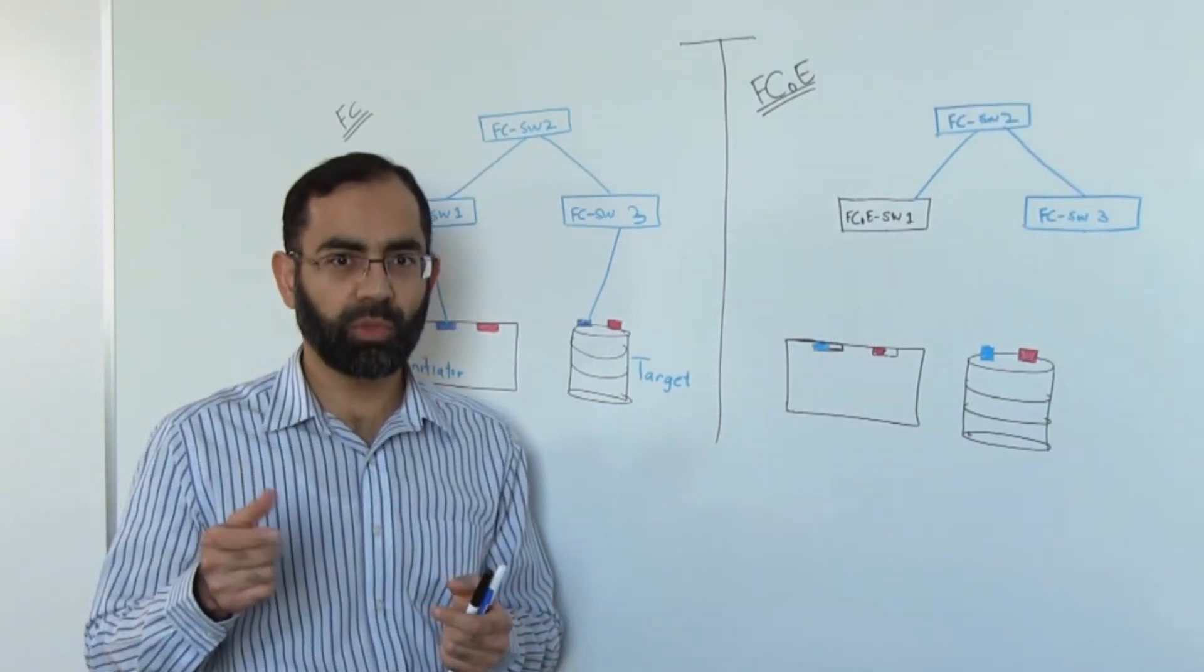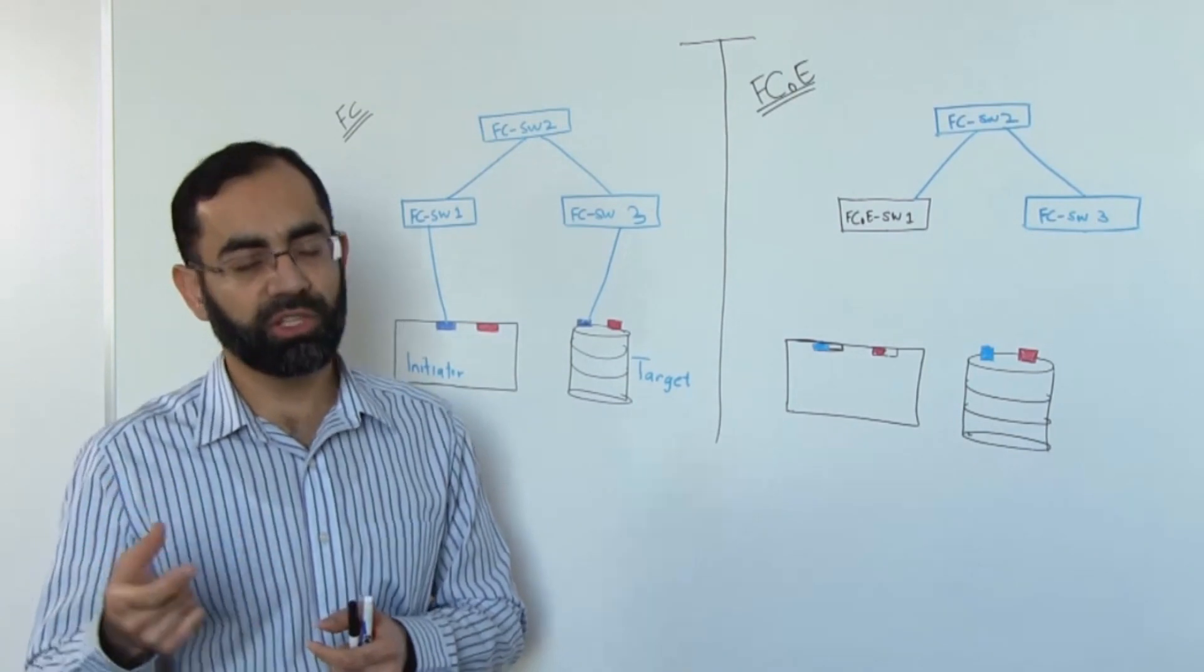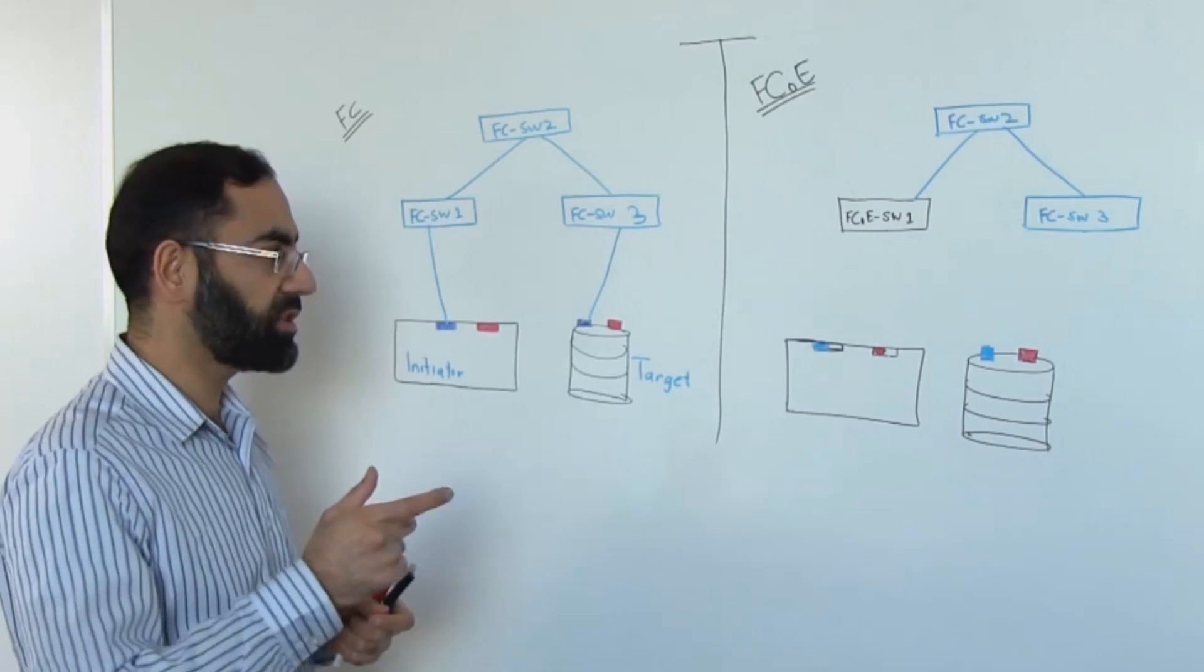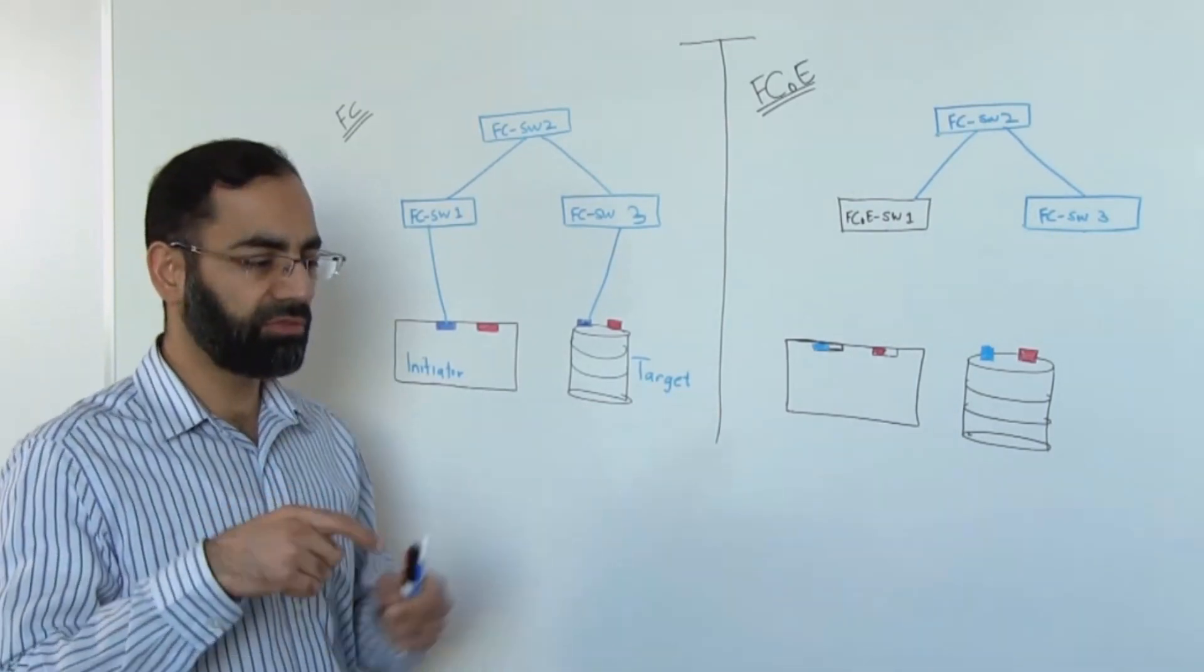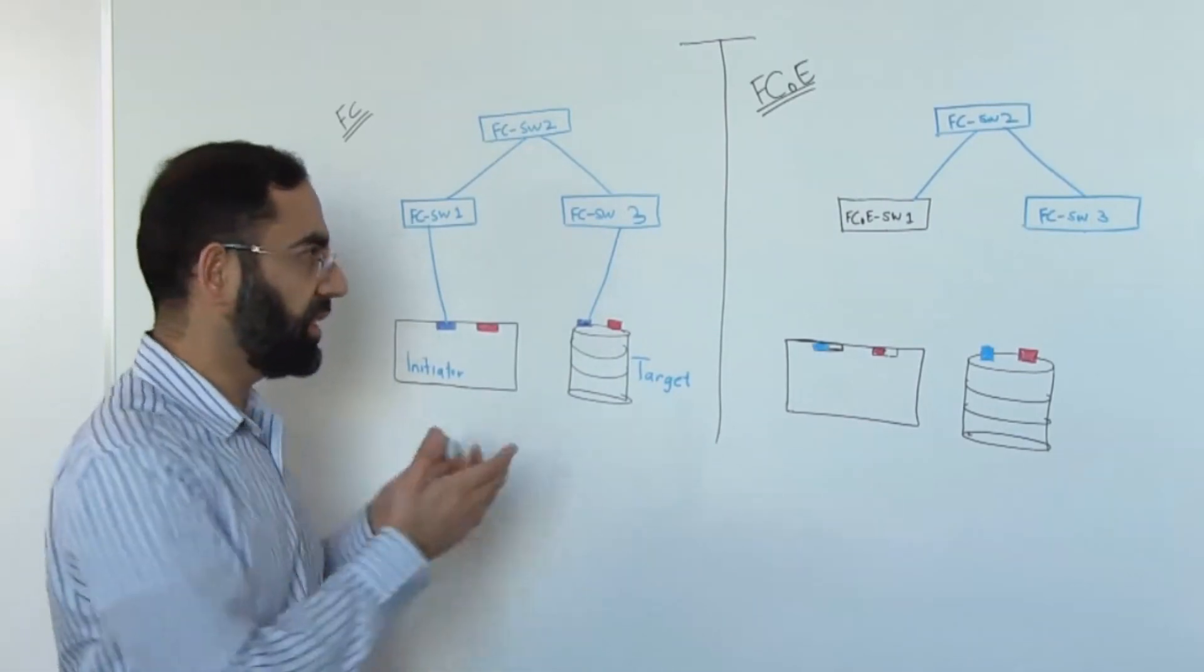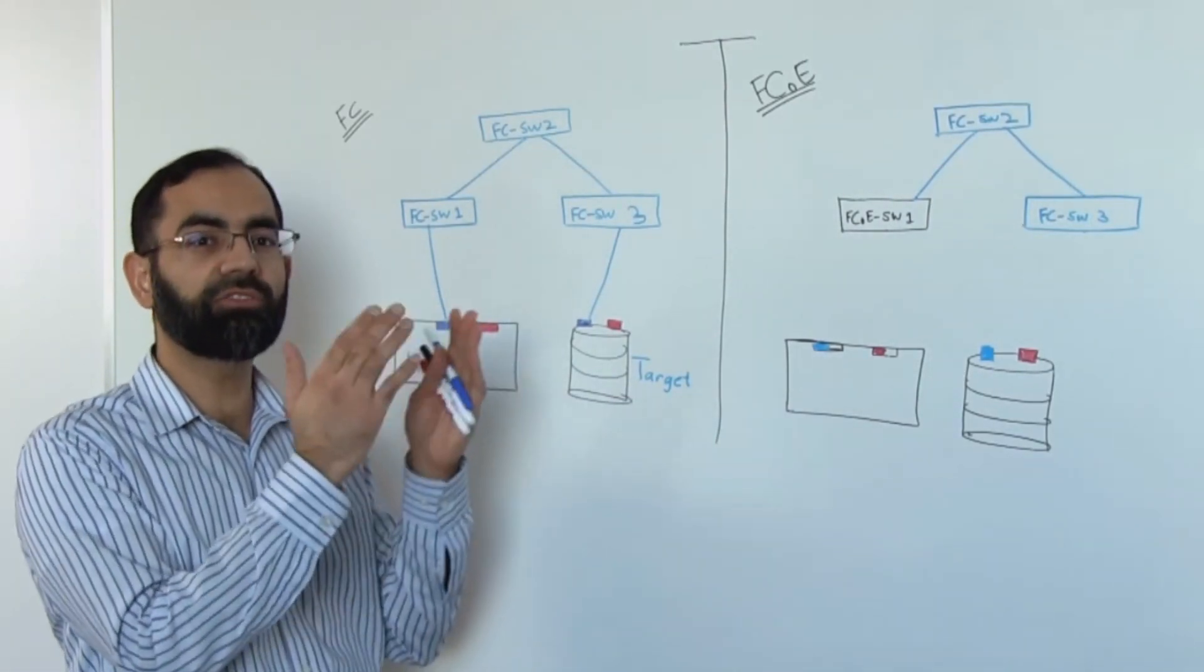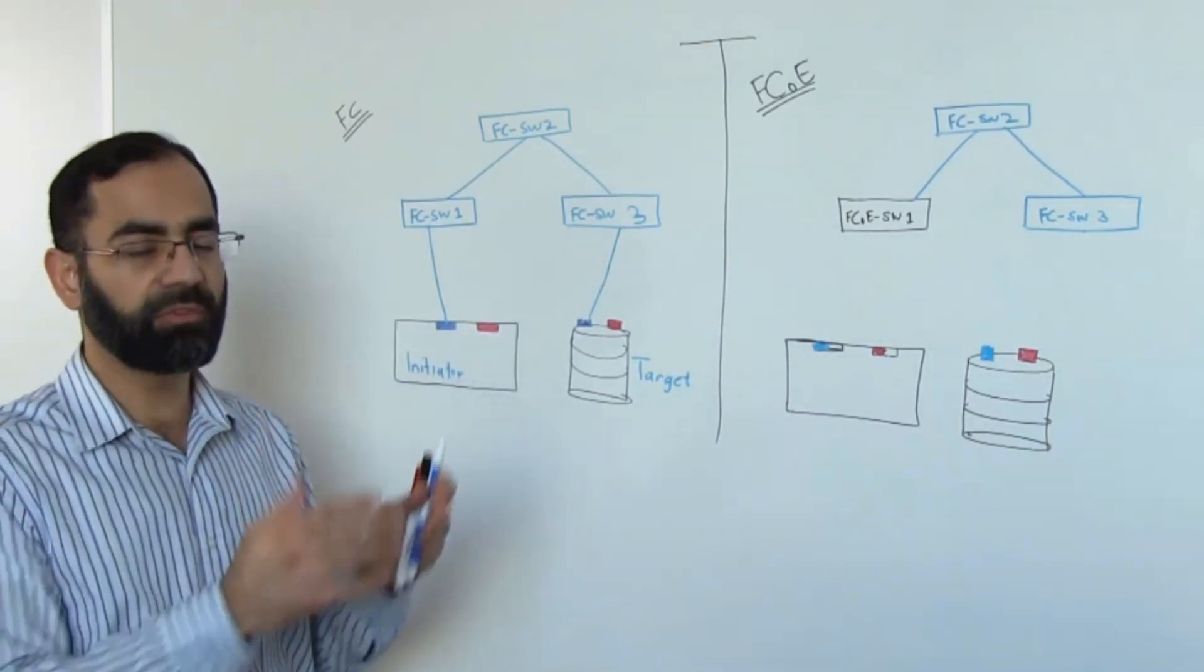Brocade, which is one of the leading vendors in the FC switching industry, is not completely bought into the VSAN philosophy. Their philosophy is that customers, in order to benefit from reliability and redundancy and resiliency in an FC fabric, should maintain completely physically separate fabrics. They should not create redundancy by using the VSAN concept on the same physical switch.